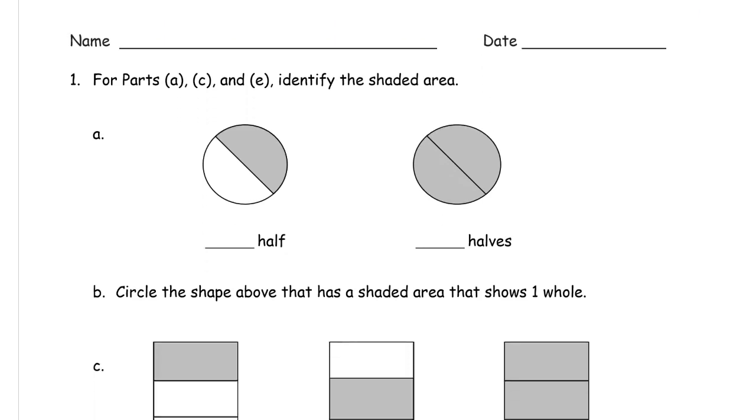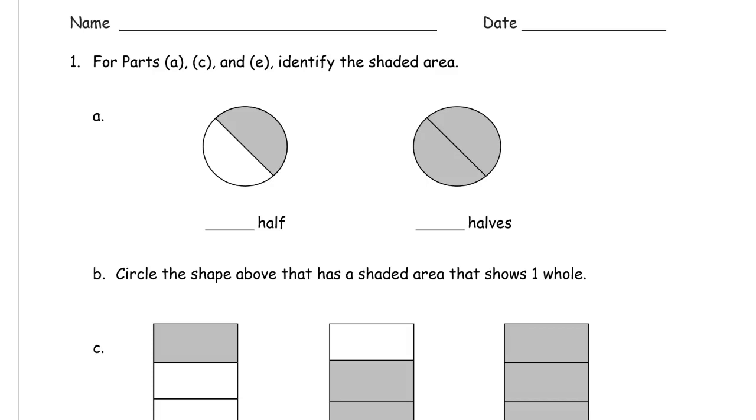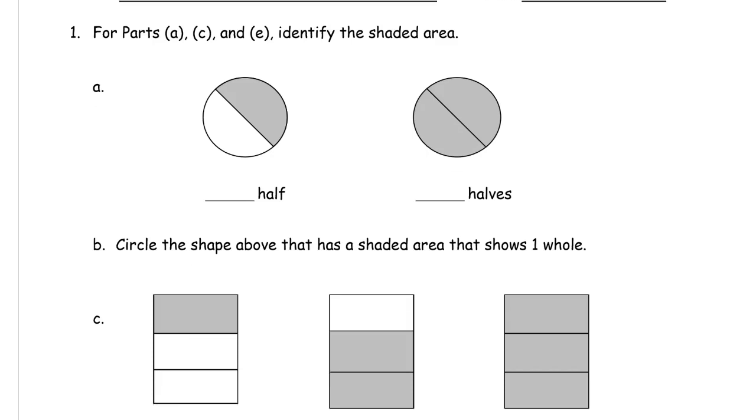And for parts A, C, and E, identify the shaded area. And here's A here, and C is here, and E is farther on down the page.